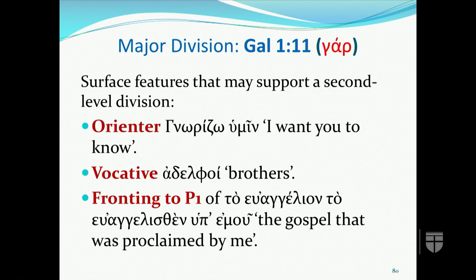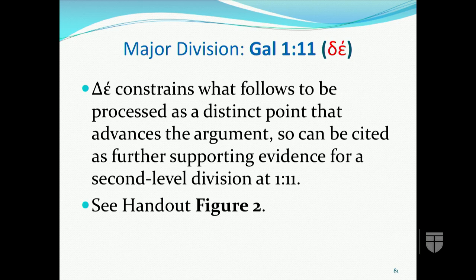Whereas 1:11 should be taken as the beginning of a macro unit, the following surface features can be cited as supporting evidence for a second-level division at 1:11: the orienter 'gnorizō humin,' the vocative 'adelphoi,' and the fronting of 'to evangelion to euangelion hupemou.' Although the preferred reading of NA28 at 1:11 is 'gar,' Longenecker is among a number of scholars who favor reading 'de' as the connective, since 'de' constrains what follows to be processed as a distinct point that advances the argument.